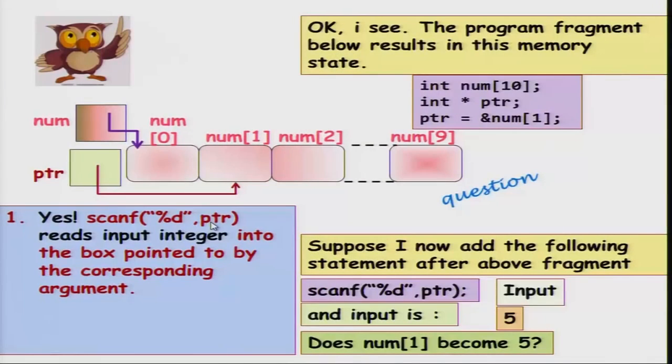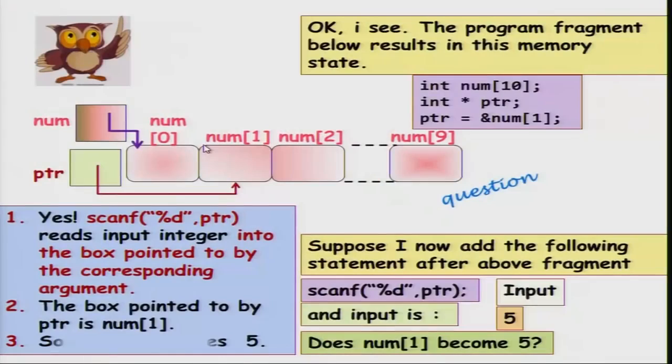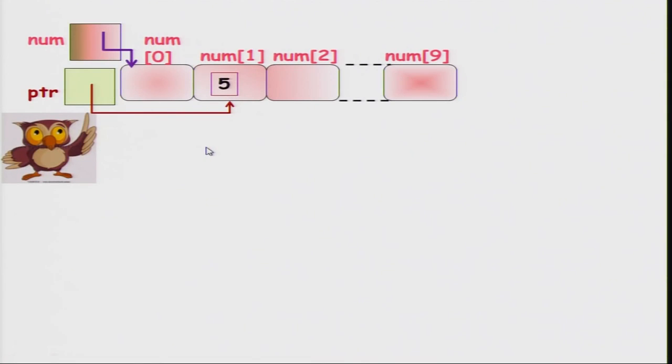For example, if I have a float variable and use scanf with %f, it takes the address of a float variable, similar to reading an integer. What scanf takes is an address of an int or float variable as appropriate. If you use %d, it takes a pointer to an integer variable and puts the user's input into that address. So as far as scanf is concerned, it does not matter whether you gave it &num[1] or initialized ptr to &num[1] and then gave ptr — it is an address and will store the integer there. So num[1] indeed becomes 5.